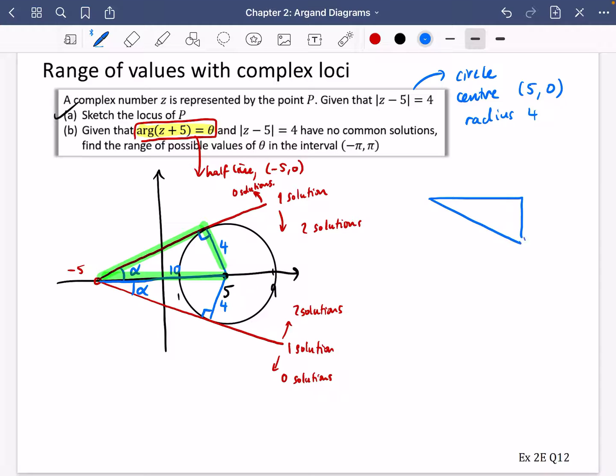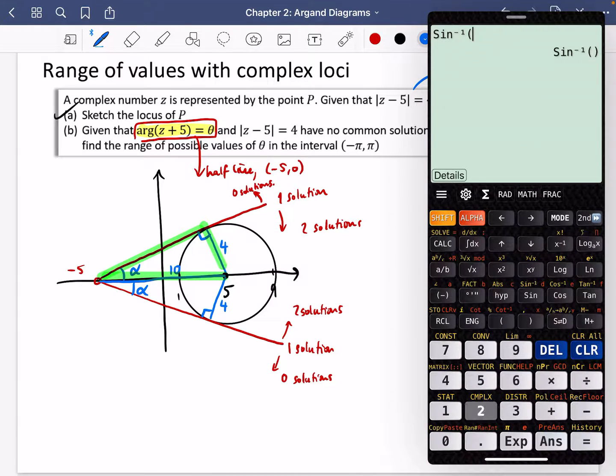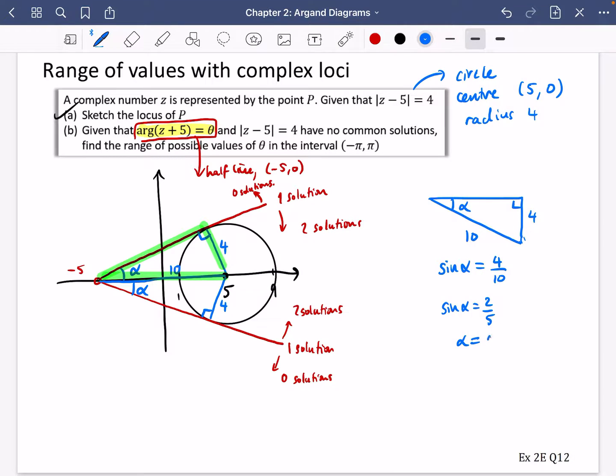So there's the right angle, the 4, the hypotenuse is 10, and the angle is alpha. And I want to find out what alpha is. Well, this time I've got the 4, which is an opposite, and the 10, which is a hypotenuse. So I'm going to find out what sin α is. Sin α is the opposite over the hypotenuse. So we have that sin α is 2/5, meaning that α is the inverse sine of 2/5, which is 0.412. I'm going to do that to three decimal places, 0.412 to three decimal places.